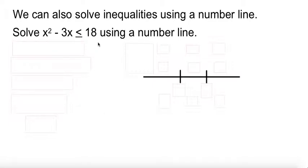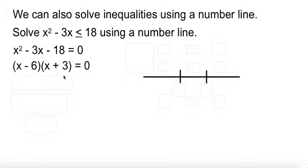So I'm going to show you the number line method. First, you bring the 18 over to get it to 0, and we're going to pretend it's equal. So we factored it, and we got values of 6 and negative 3 that we put on a number line. Now, I put negative 3 to the left because it's the smaller value. 6 is the larger one, so it goes to the right.